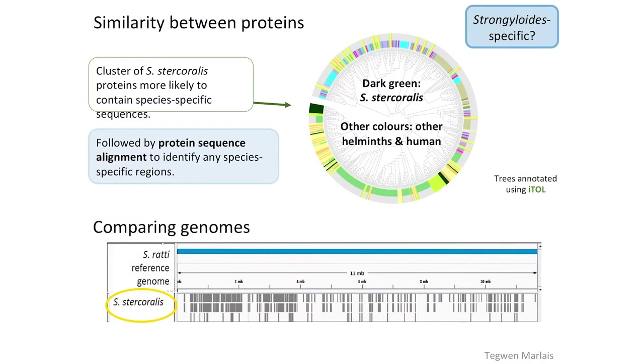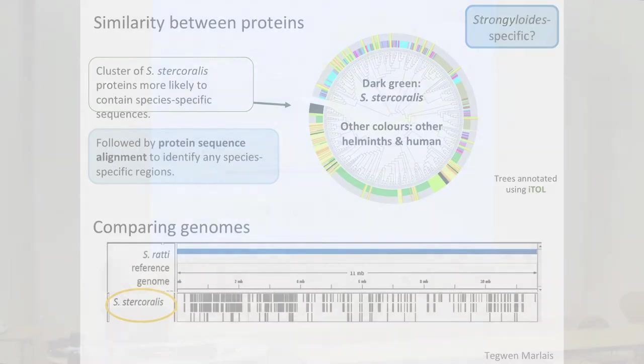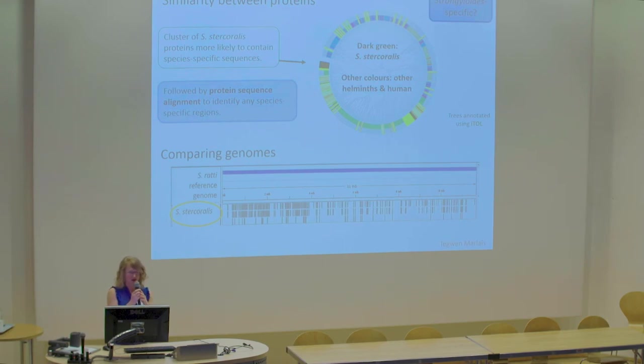The other way of doing this is directly from the genomes. This is the ratti reference genome represented by the blue bar, aligned with the stercoralis genome. The dark grey bars underneath represent differences between those genomes. In a genome viewer like this, you can zoom right into gene level, so if there's a protein of interest you can zoom in to see if it's different between those two species, and whether those differences affect the amino acid.